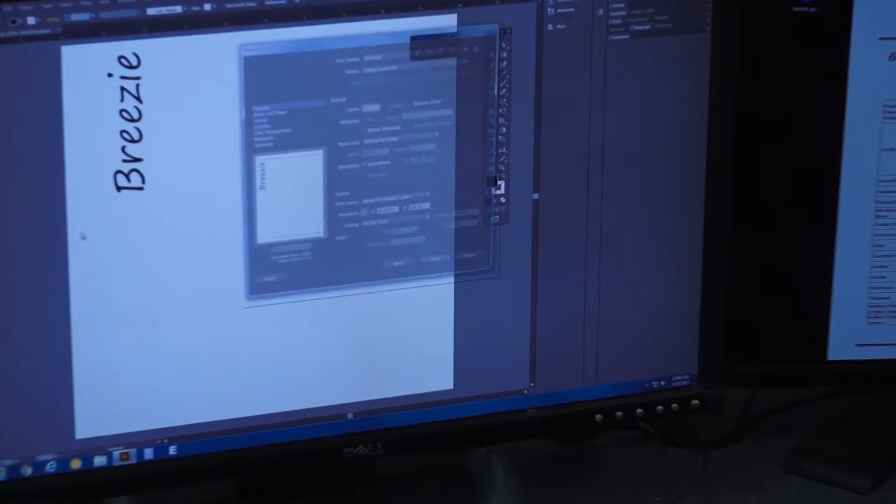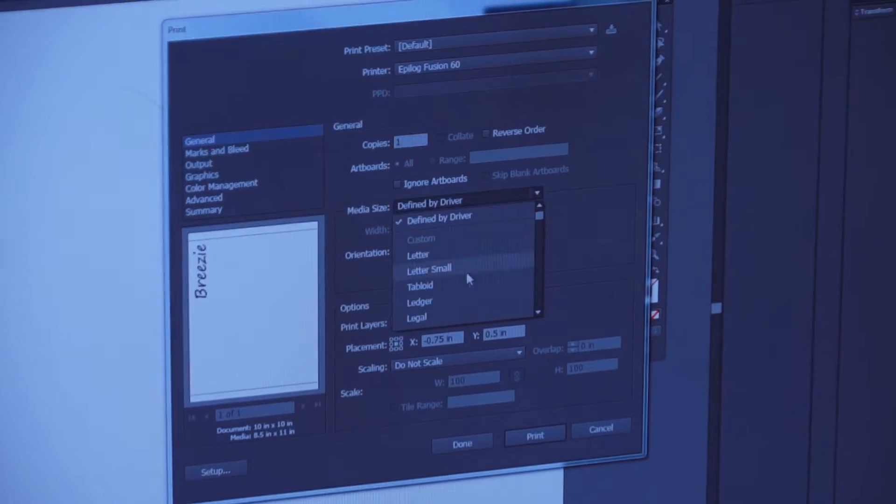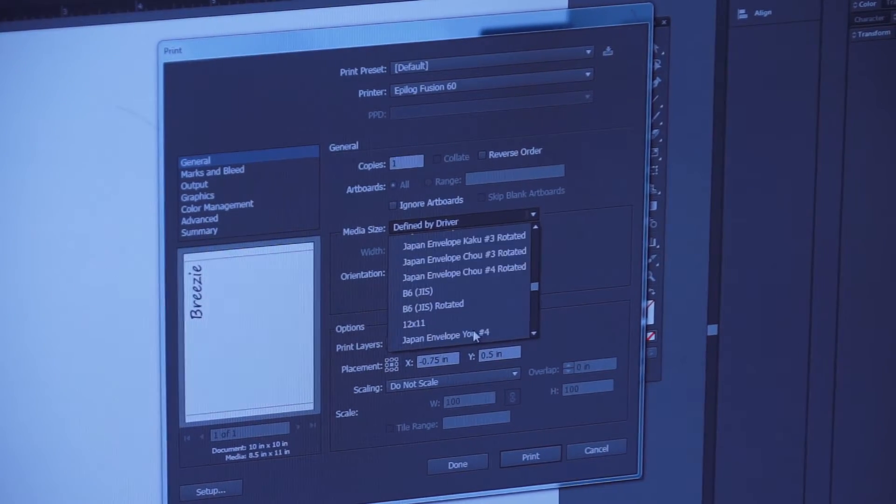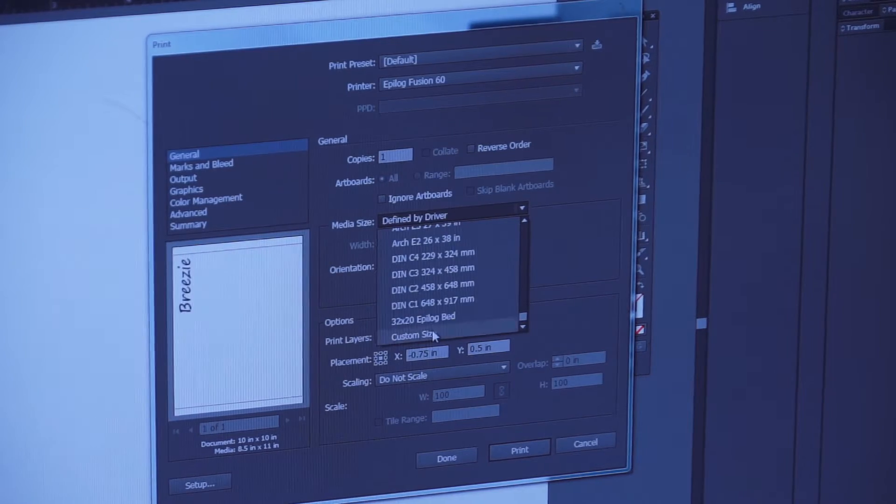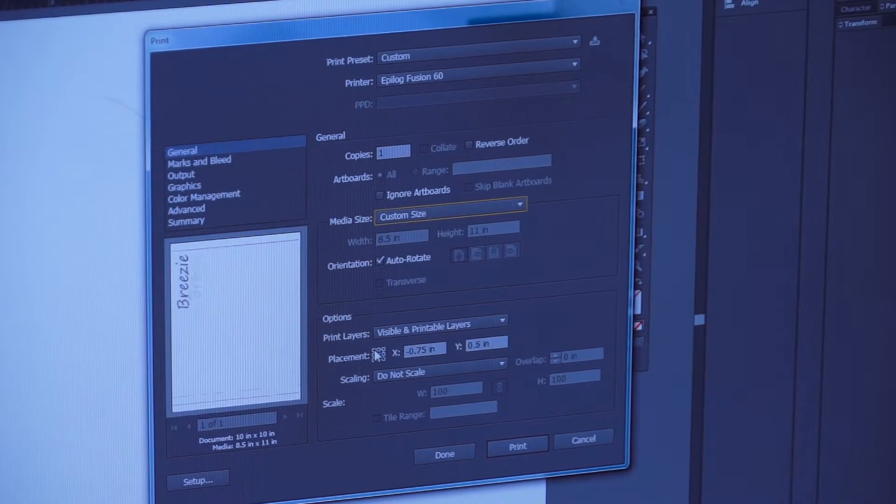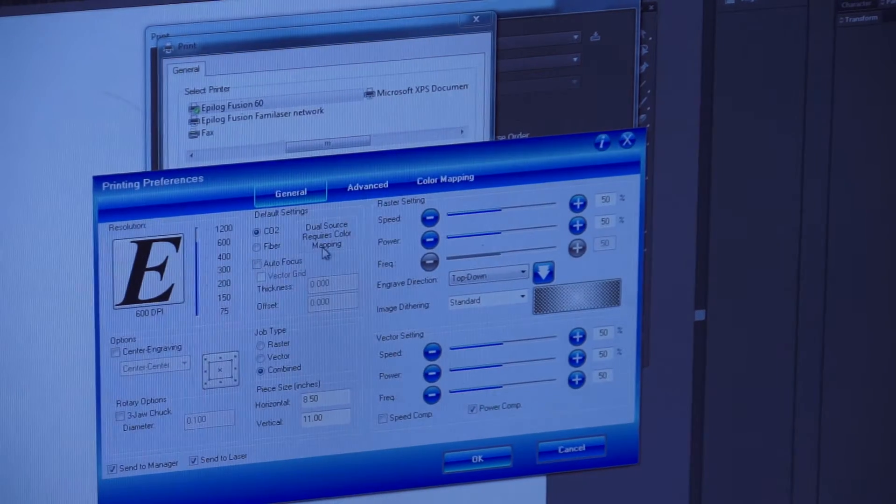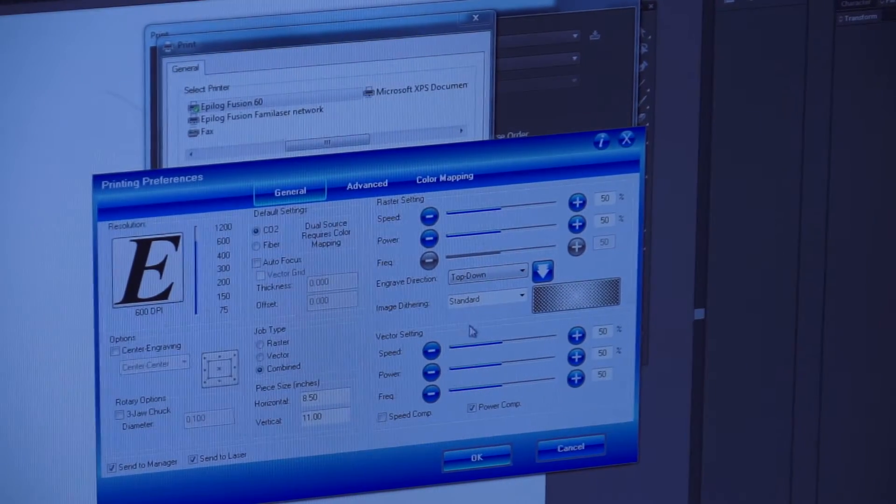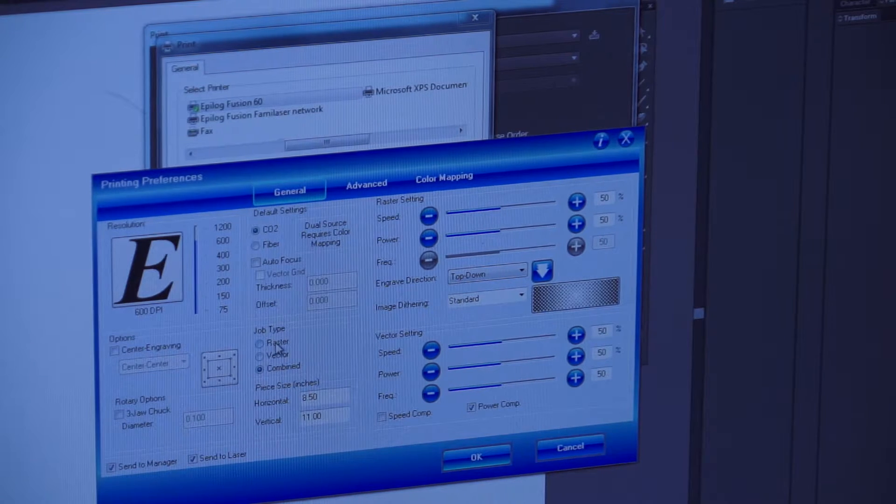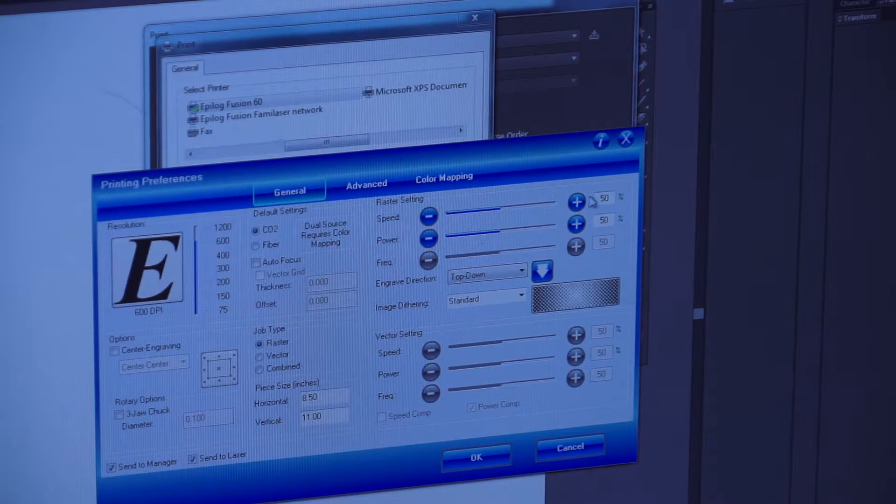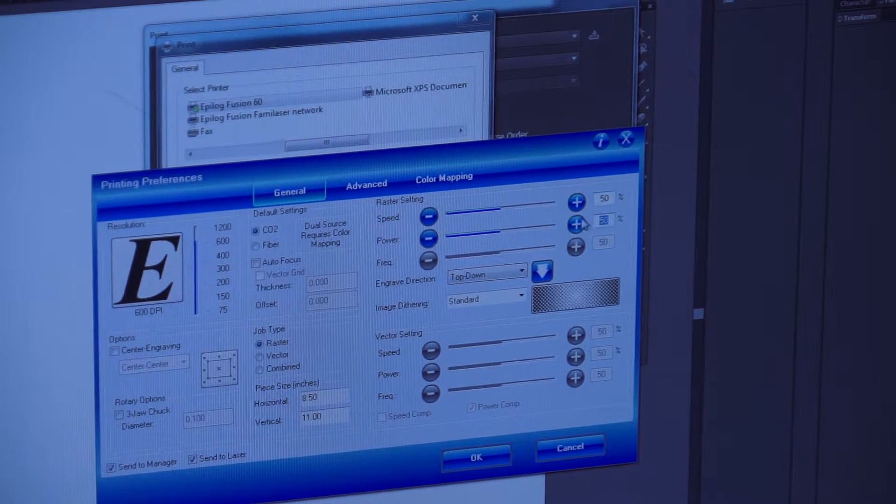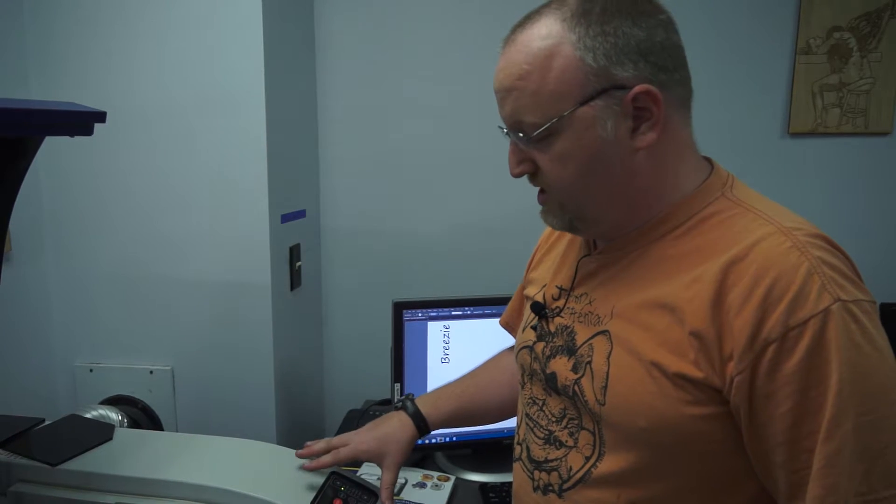For this, we want to make sure we select all the right settings. The biggest one we want to worry about is the Epilogue settings here. We want to make sure we're doing raster only, and then we want to set our speed and our power. The only thing left to do is tell the printer to actually print the job.